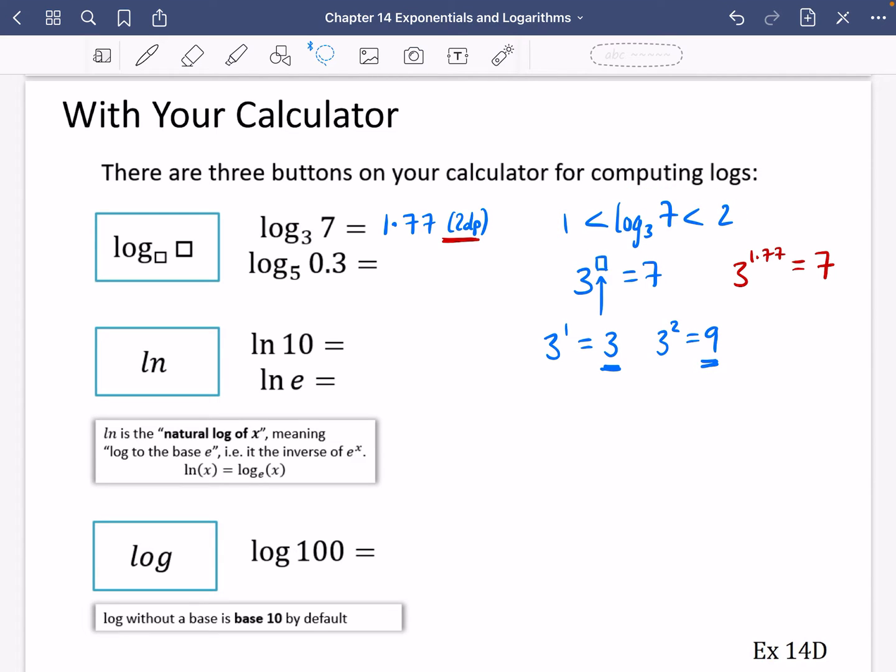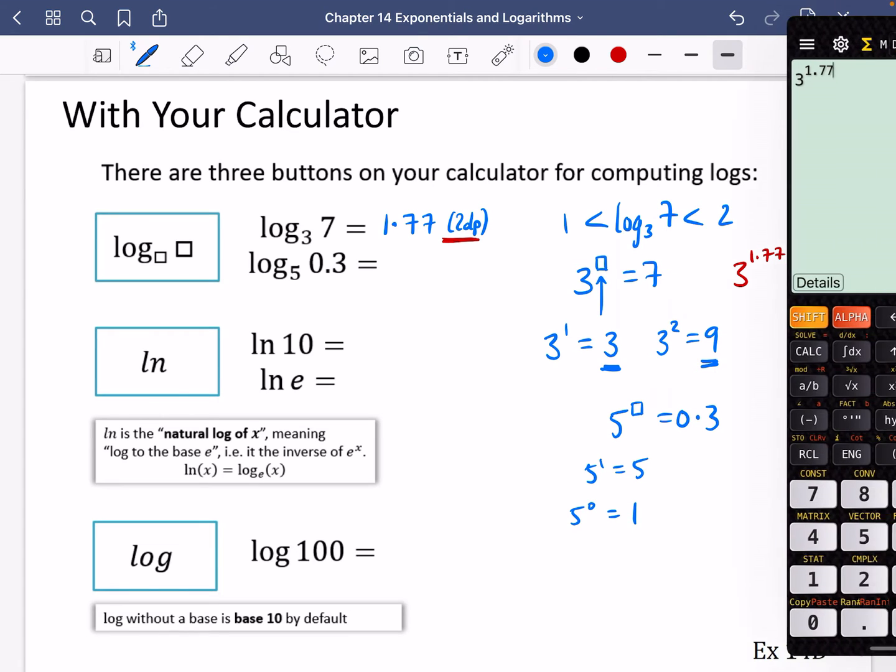I'm just going to move some of this across so it's a little bit less busy. Okay, so this next one, we're actually saying, what is the power of 5 that gives me 0.3? Well, 5 to the power of something is giving me 0.3. I want you to try and predict what this will be before we type it into the calculator. Well, 5 to the power of 1 is 5, and 5 to the power of 0 is 1. So hopefully that's going to give you a hint. I'm expecting there to be a negative number for this one.